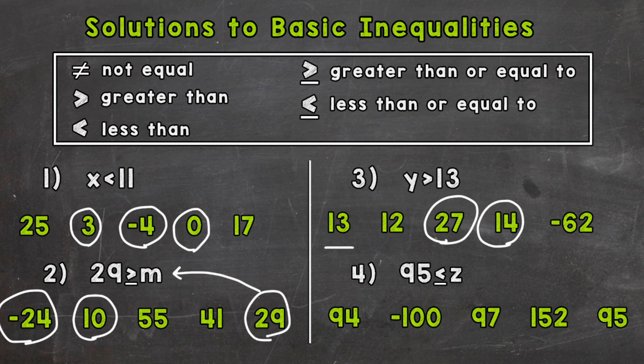Now 97 would work. That's greater than 95. So we could say 95 is less than or equal to 97. That's true. Same for 152. 95 is less than or equal to 152. And lastly, 95. That would be true because we have the or equal to. 95 is less than or equal to 95. So those three solutions are correct.